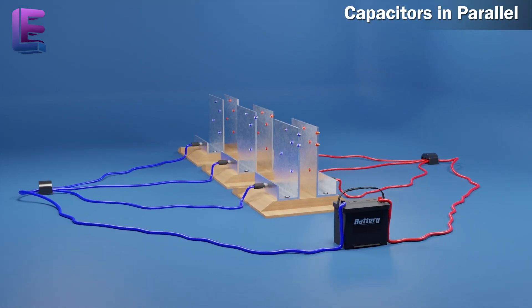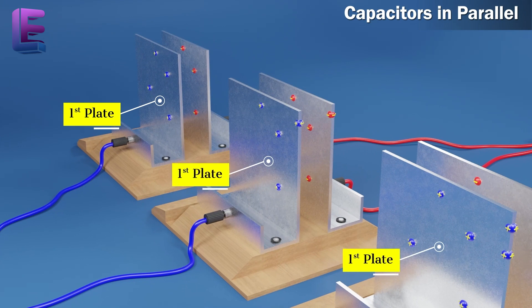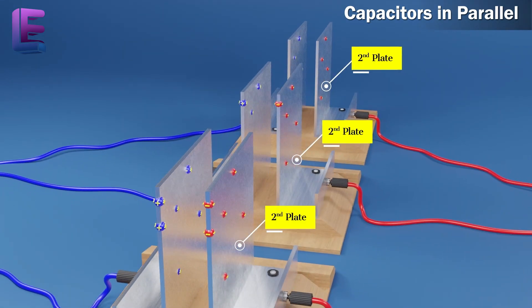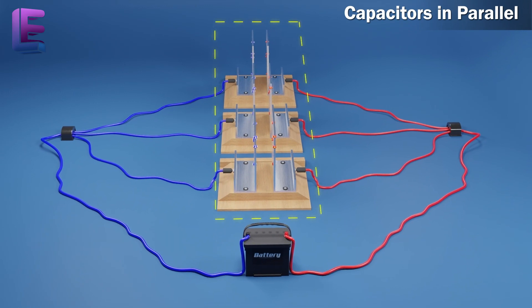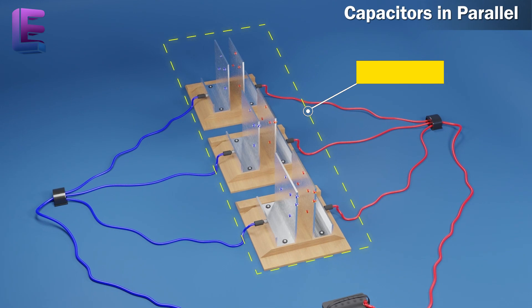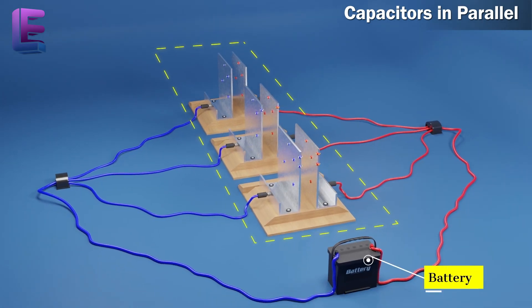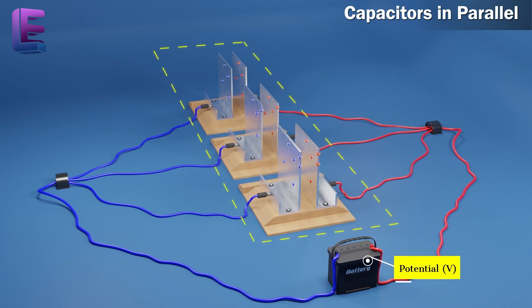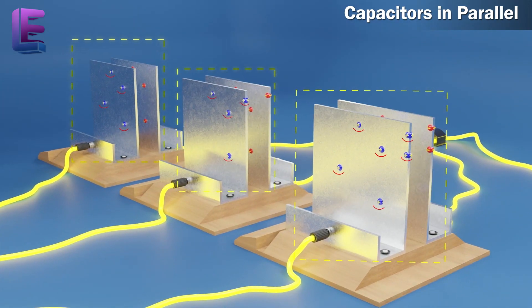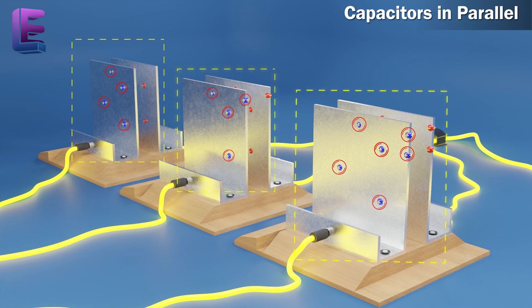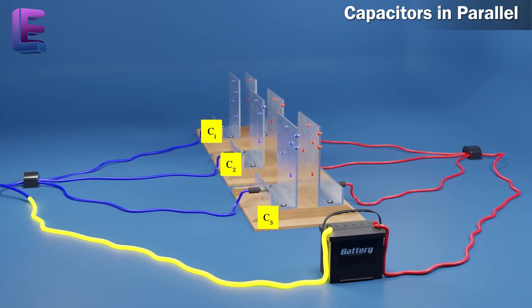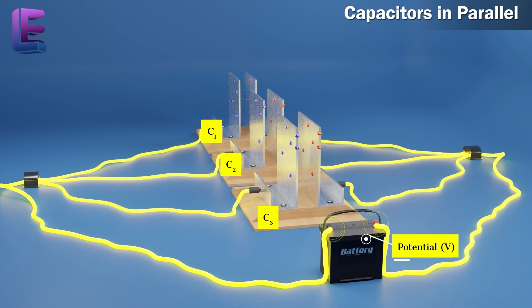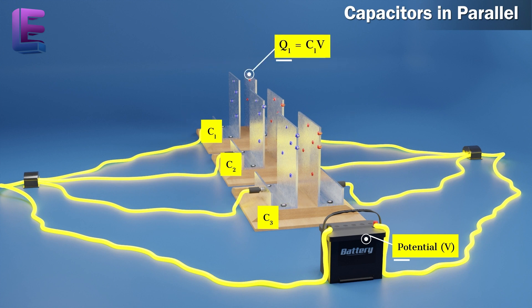Capacitors in parallel. In the parallel connection of capacitors, all the first plates are connected to one terminal while all the second plates are connected to the other. These terminals are then connected to opposite poles of a battery. In this type of connection, the potential difference between the plates for each capacitor remains the same. This potential difference V is the same as the potential difference between the opposite poles of the battery. However, the magnitude of charge is different for each capacitor. If three capacitors of capacitance C1, C2, and C3 are connected in parallel to a battery with potential difference V, the charge on the first capacitor Q1 is equal to C1V.